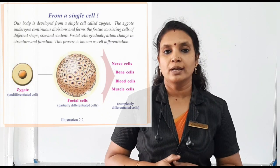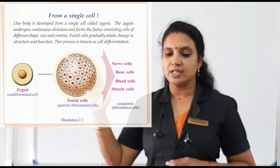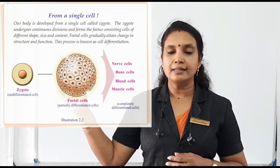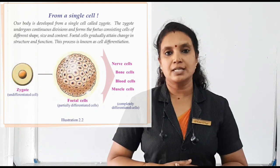So the stomach is made up of different types of cells. In order to sense the appetite, nerve cells are there. In order to grind, different types of muscle cells are there. That is why each and every organ in our body is made up of different types of tissues. Hope it is clear. Now I will explain the illustration 2.2 given in the textbook. In this illustration, you can see the zygote, the fetal cells, and the specialized cells formed from the fetal cells.